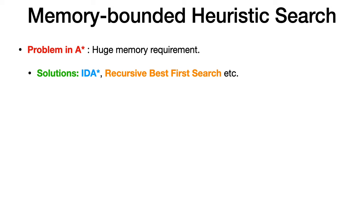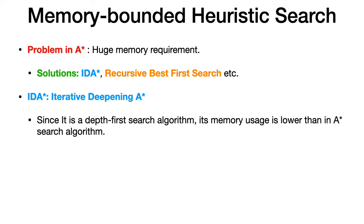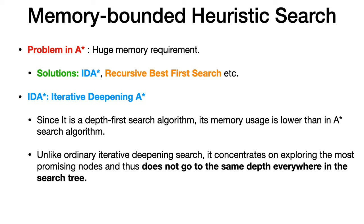IDA* stands for Iterative Deepening A* algorithm. It is a variant of depth-first search algorithm and therefore has a lower memory requirement compared to A*. It is also similar to iterative deepening depth-first search, which we discussed in the uninformed search techniques.